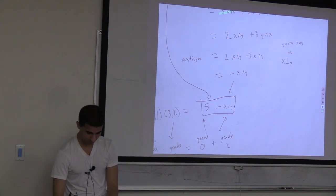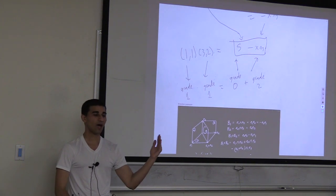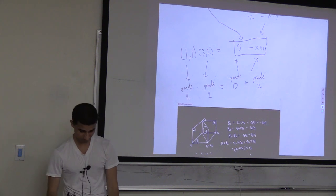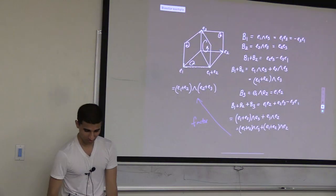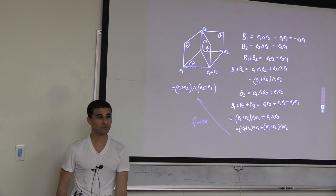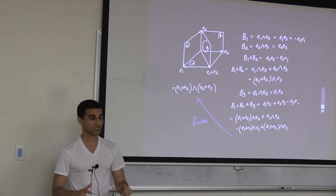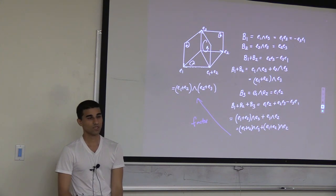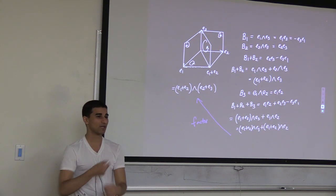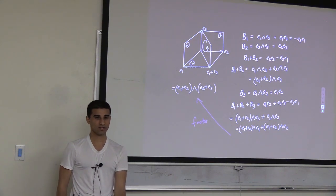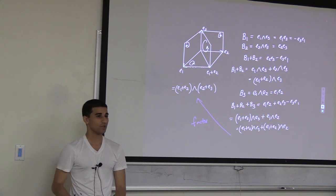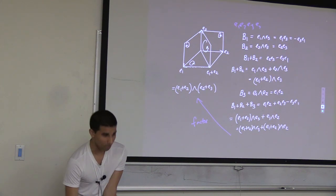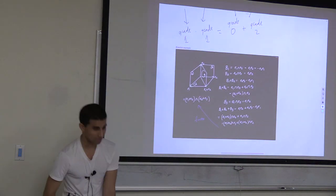Grade 1 element (line) geometric-producted with another grade 1 element (line) gives a scalar plus a bivector - a point plus a plane. The same idea applies to multiplying planes together. The wedge product is anti-symmetric, distributes over addition, and is associative - all the nice properties of a product you intuitively expect. For higher grades there are just more terms; a 4-vector would be e1∧e2∧e3∧e4. Using a computer is recommended for longer calculations.